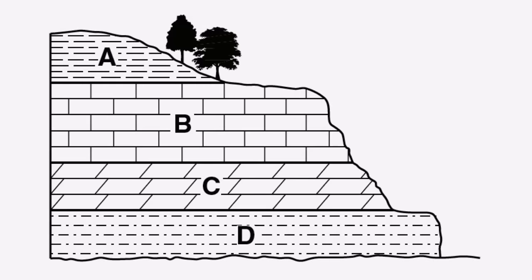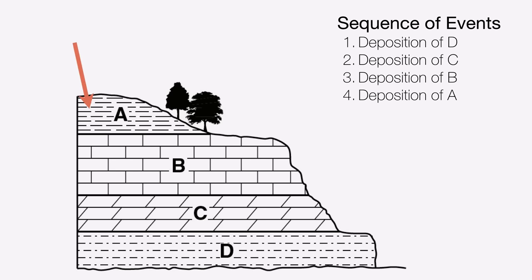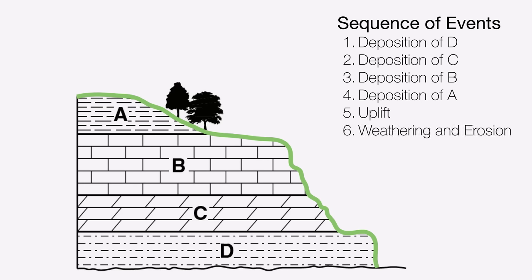Let's take a look at an actual sequence of layers and figure out what events happened to form it. The law of superposition says the layer on the bottom — layer D, siltstone — must have been deposited first, then layer C above it, then B, then A. You'll notice the surface of these rocks is irregular and jagged, and we even see some trees. That means we can no longer be underwater, and there had to be a period of uplift followed by weathering and erosion, which is actually still taking place today.